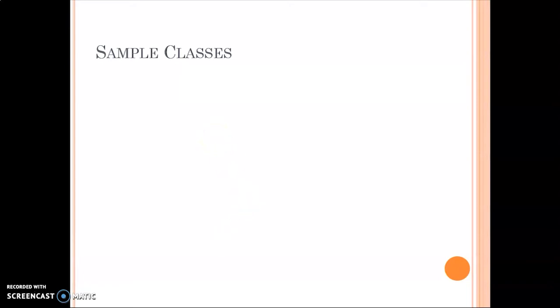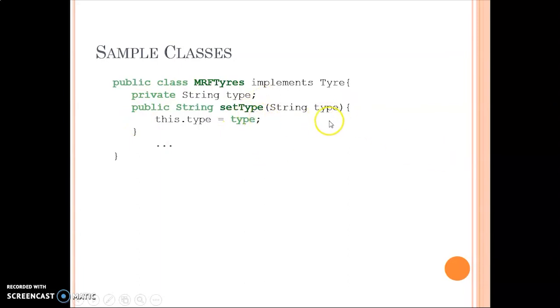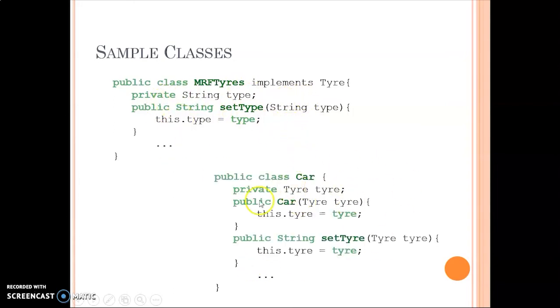Before we start seeing the various ways in which auto-wiring can be implemented, let's take two sample classes. We have the class MRF Tires which implements an interface Tire. It has one property called type, and a setter method set-type that takes the type as input and stores it in the variable.